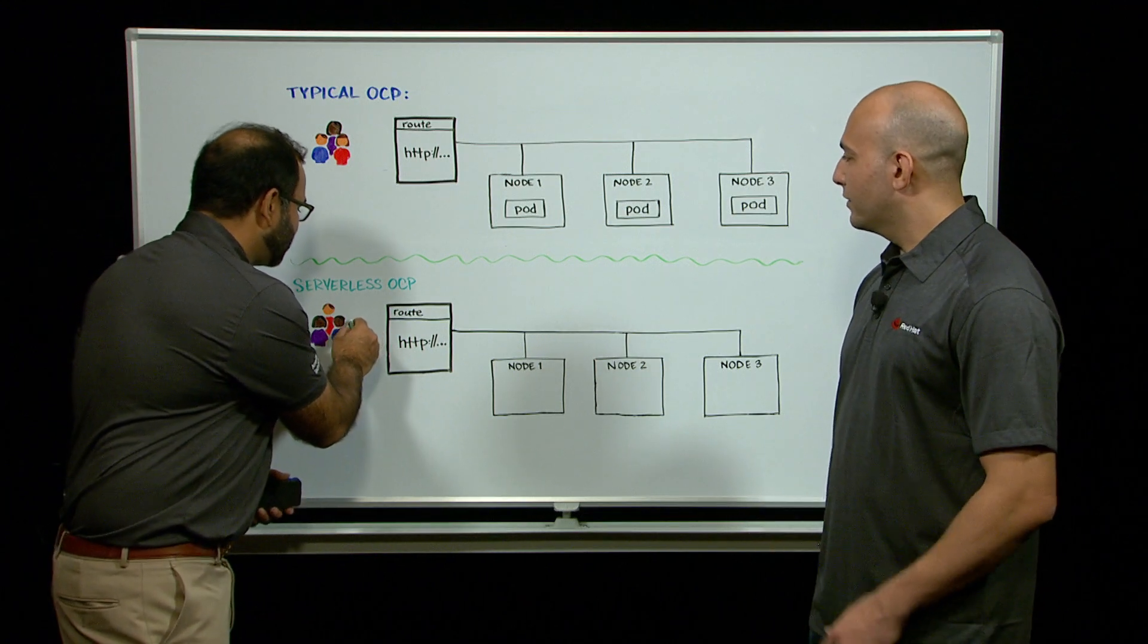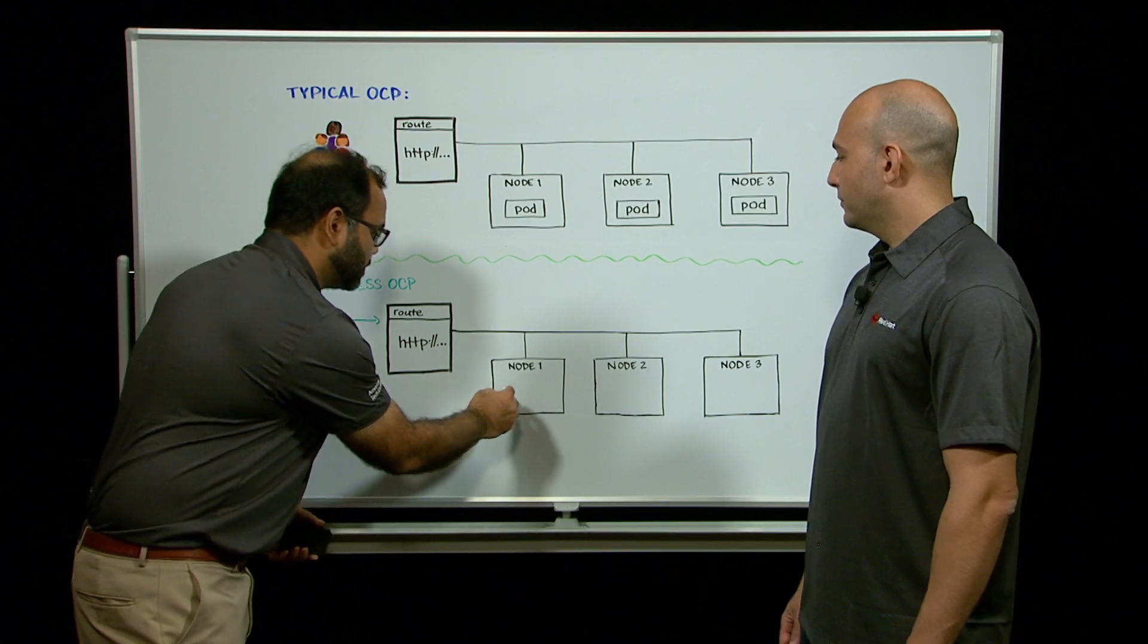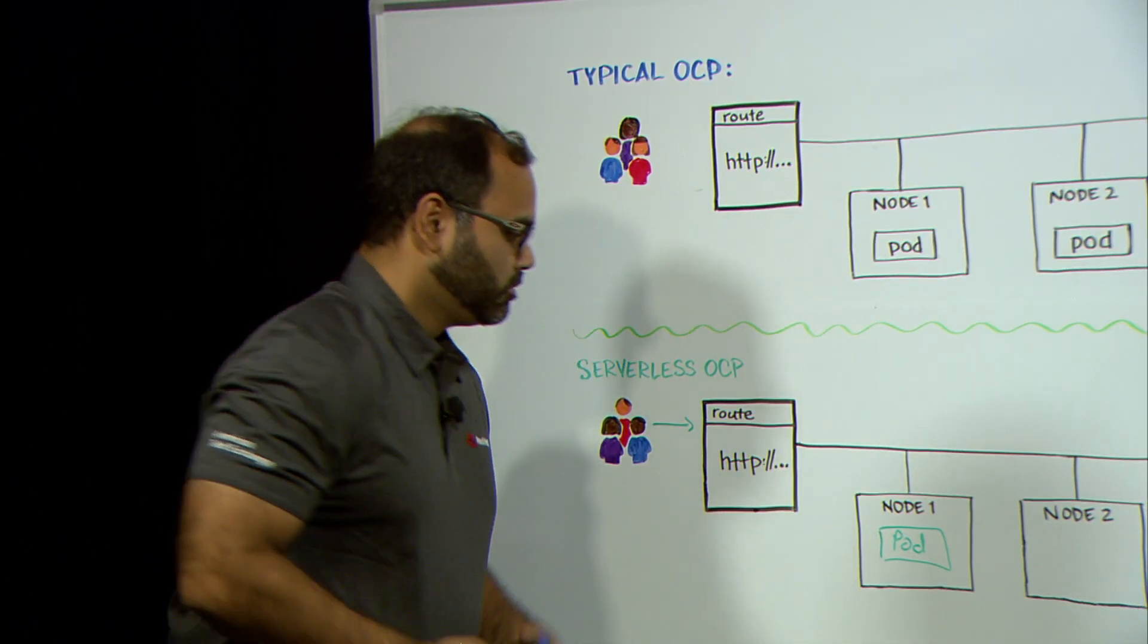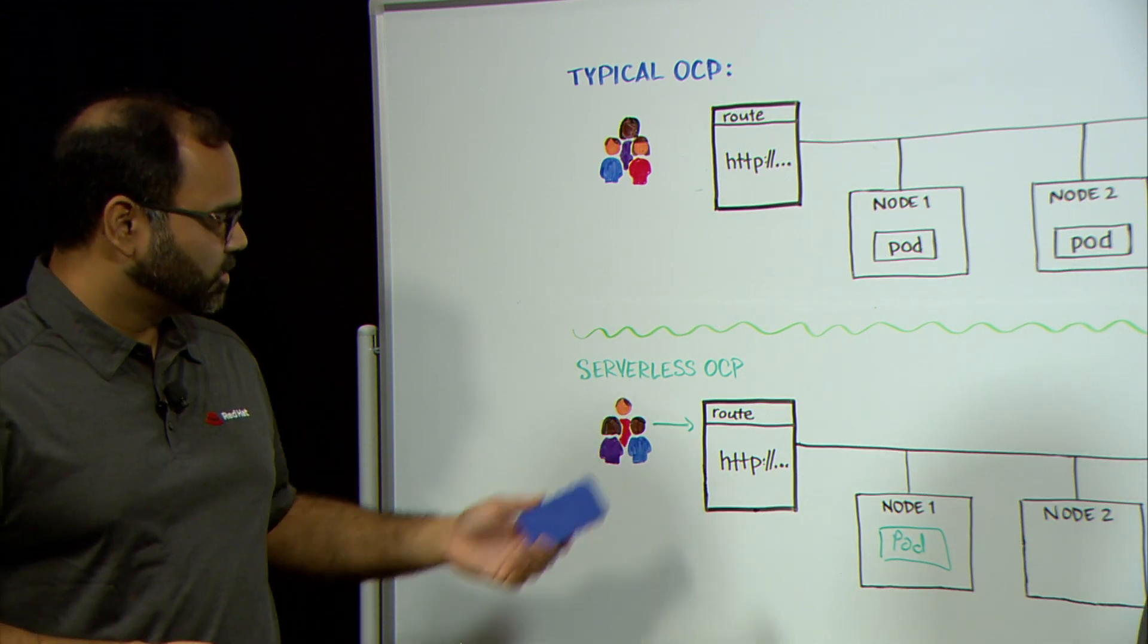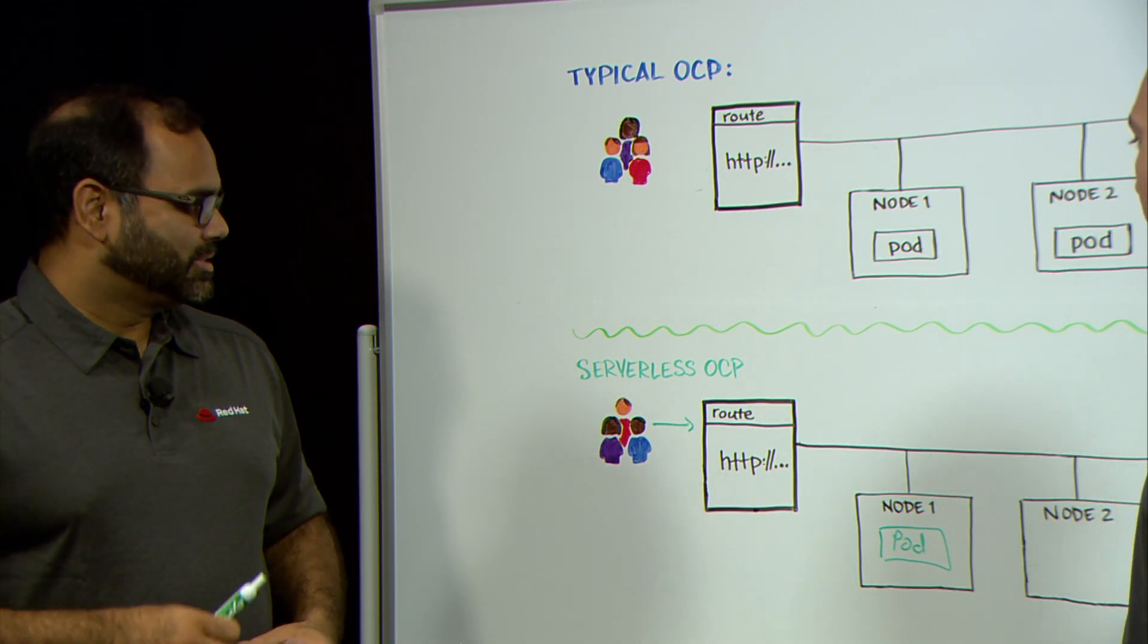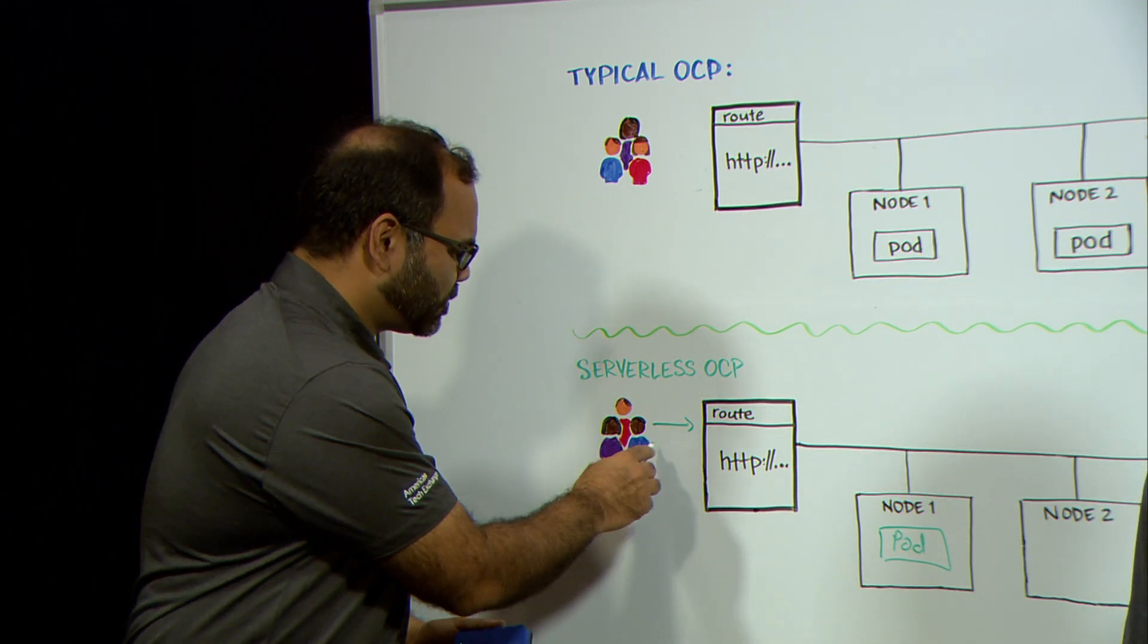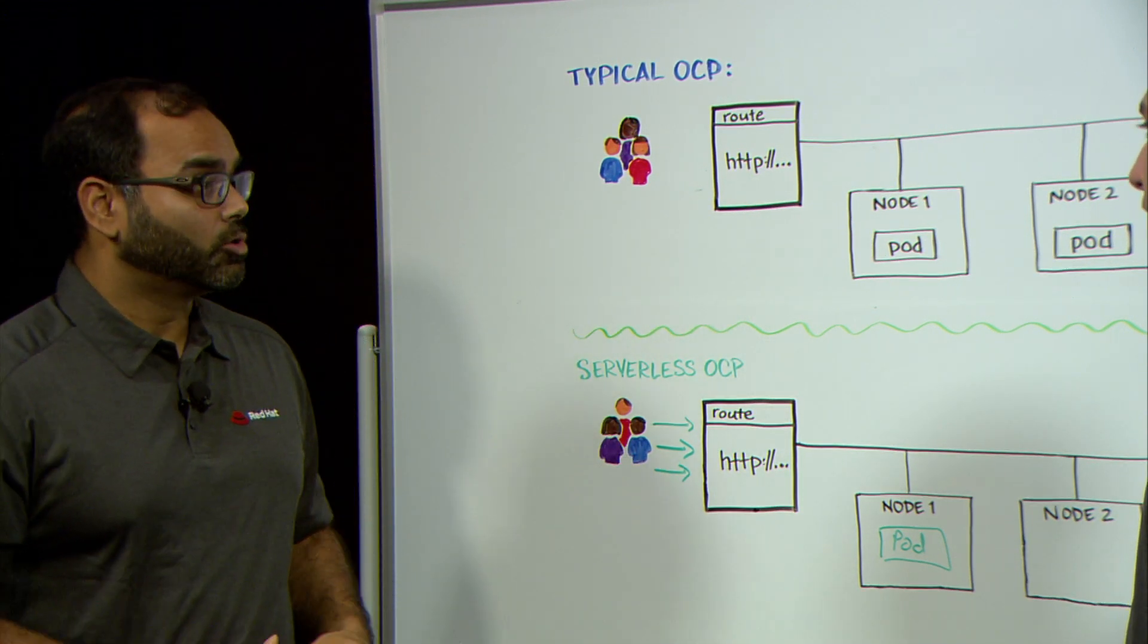Now, as the app starts getting its initial set of traffic, OpenShift will detect that the app needs to start serving, so it will spawn a pod, and now we've got a footprint on the cluster using resources to serve the traffic that's coming in. That's great. And that's great while that traffic is about the same load, but as we go throughout the day and we start hitting peak load, start getting more and more traffic,